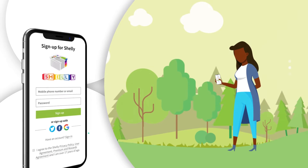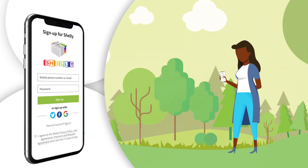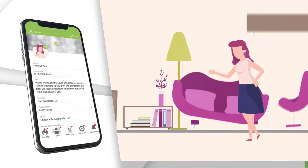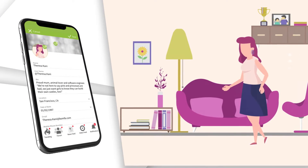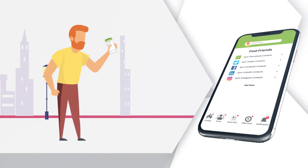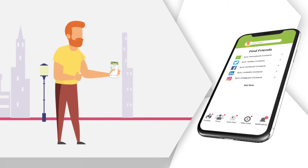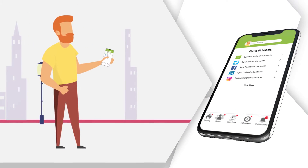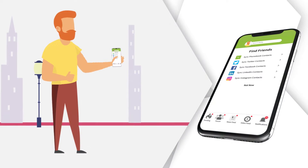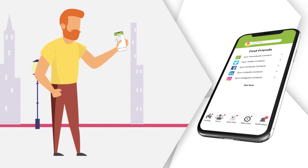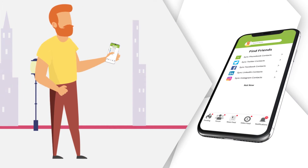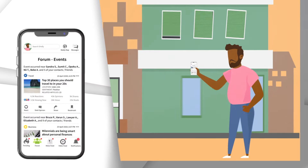Go to your app store to download the Shelly News app and sign up. Build your profile page by providing basic information about yourself. Complete the sign-up process by synchronizing your contacts and friends from your phone book as well as from other social media platforms such as Twitter, Facebook, LinkedIn, Instagram and others.